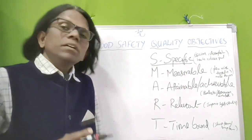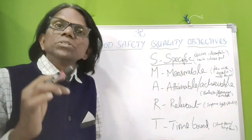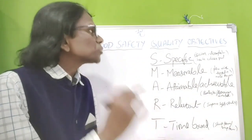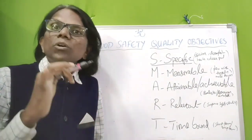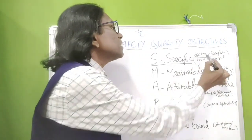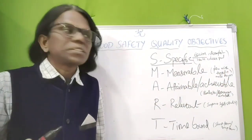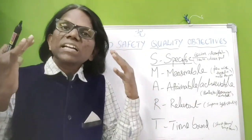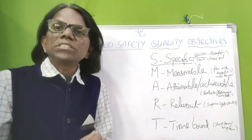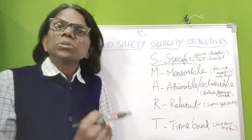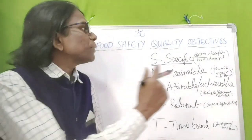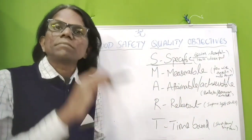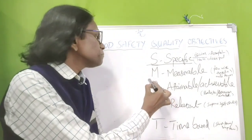The quality objective should reflect the site's aim — what you want to achieve and accomplish. It should be related to the quality policy and comply with the site's requirements. You should have clear clarity on what you want to accomplish and how you want to achieve the goal. The goal should be specific — that's what S means.